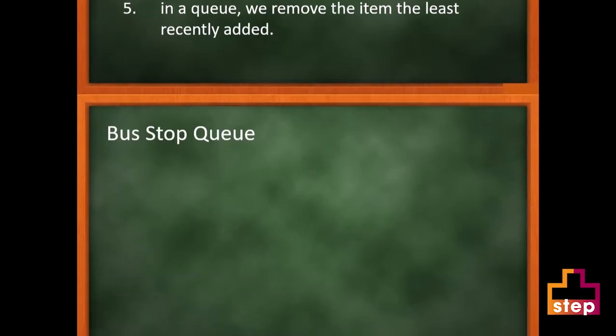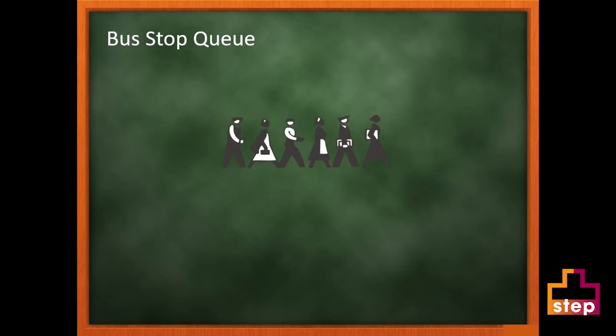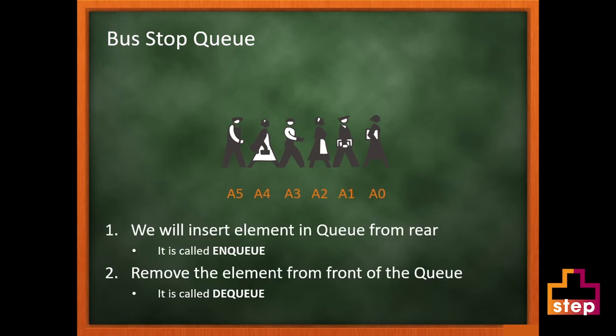Consider a queue at a bus stop. People always join the queue from the back and leave the queue from the front. Similarly, while implementing a queue with an array, we always insert an element at the last index, which is also called the rear.